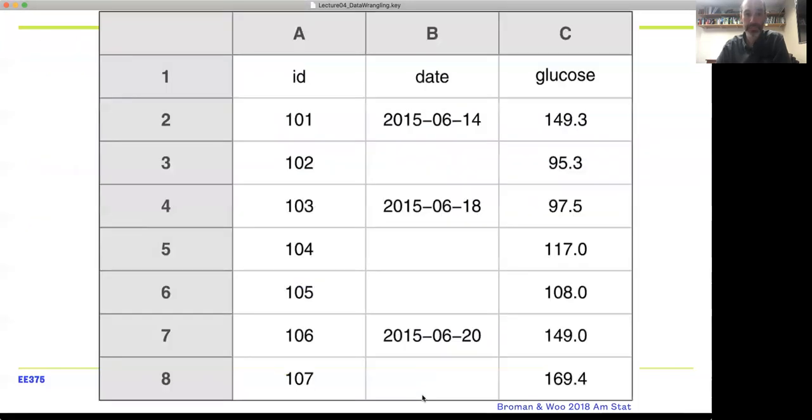Here's an example of a data set that's not horribly formatted. We've got an ID column—that's a variable—a date variable, a glucose variable. One row is each observation, so we've got that row-column format. We're missing data, so this date data here is a problem of how do we interpret this data.